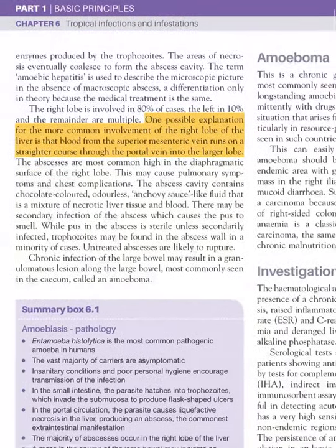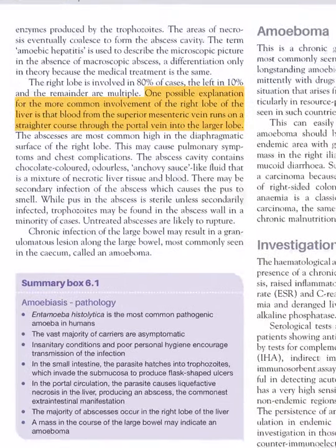Amoebic liver abscess most commonly occurs in the right lobe of the liver. The explanation is that blood from the superior mesenteric vein runs on a straighter course through the portal vein into the larger right lobe.